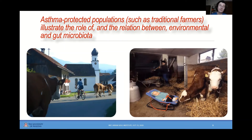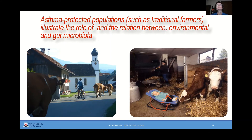A lot of what we understand is coming from studies we and others have been doing in populations that are protected from certain diseases. In our case it's asthma, but there are similar studies in other diseases. We found something now widely known as the farm effect. This is the finding — super reproduced everywhere, very robustly — that traditional farming communities are protected against complex diseases such as asthma, but not just asthma — also inflammatory diseases of the gut and others.